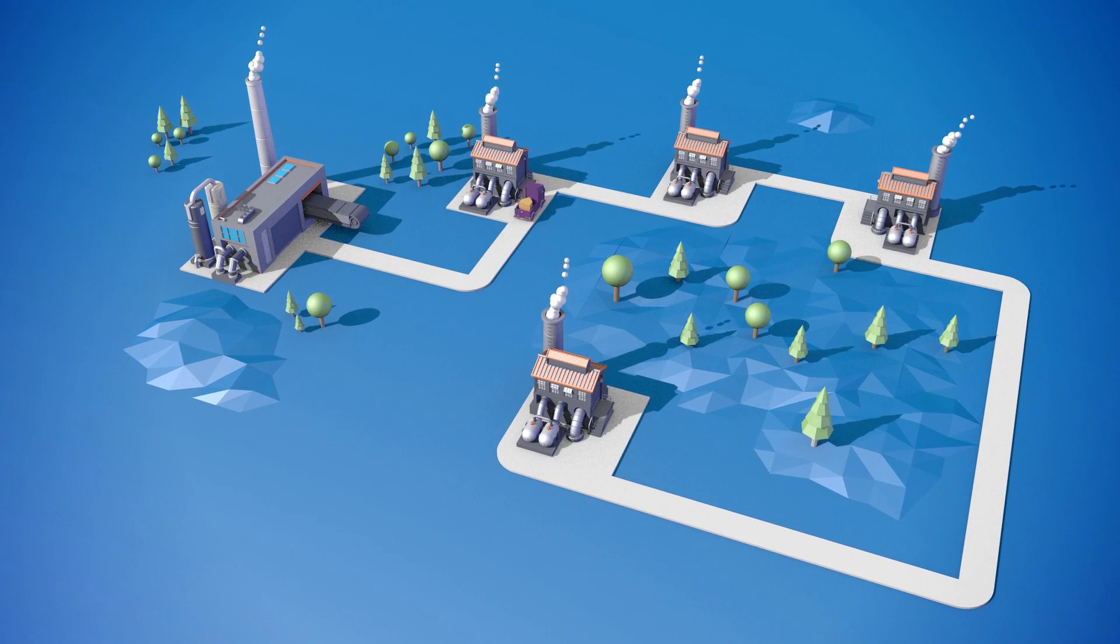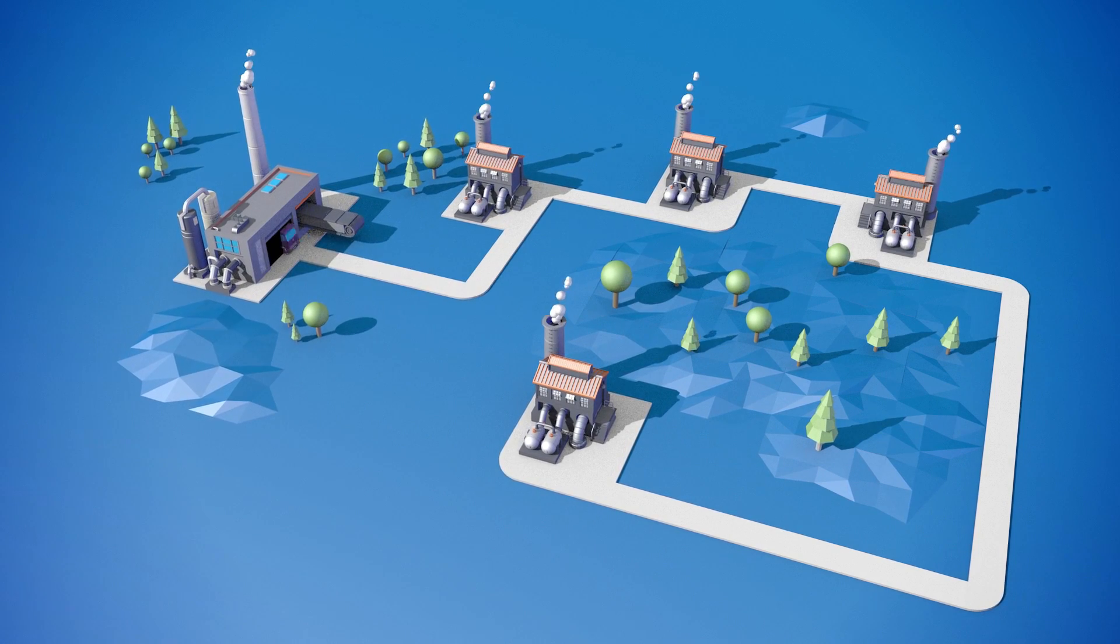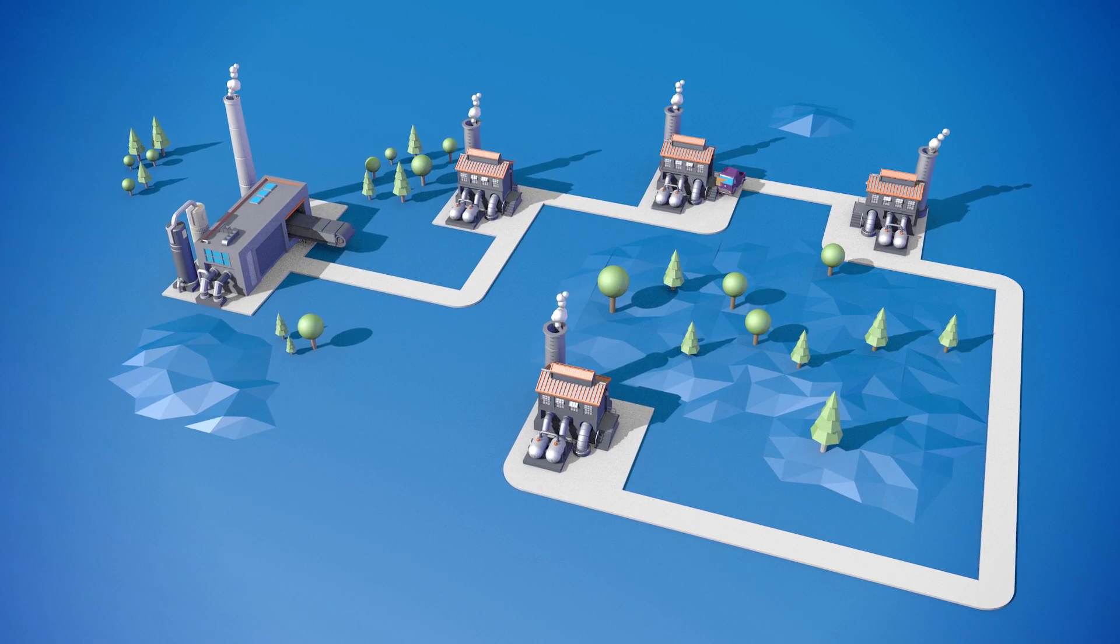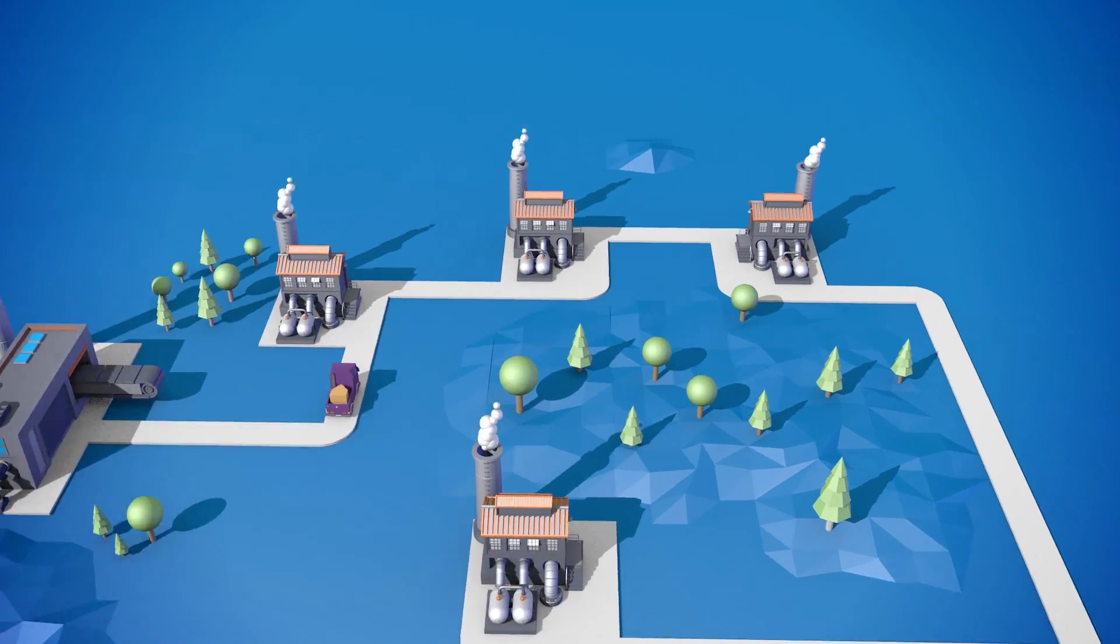A van travels from a production facility to its first supplier and back again. It then travels to the second supplier and returns once more, and so on until it has visited all the suppliers.